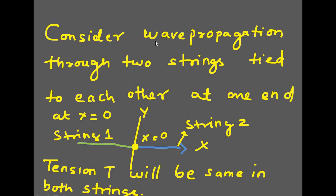Consider wave propagation through two strings tied to each other at one end at x equal to 0. Let us consider this as string 1 and this is string 2. We are tying it in a knot and assuming that the wave is propagating in the x direction.